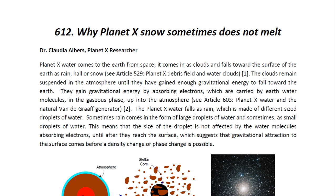Planet X water comes to the Earth from space. It comes in as clouds and falls towards the surface of the Earth as rain, hail, or snow. The clouds remain suspended in the atmosphere until they have gained enough gravitational energy to fall toward the Earth. They gain gravitational energy by absorbing electrons, which are carried by Earth water molecules in the gaseous phase up into the atmosphere.